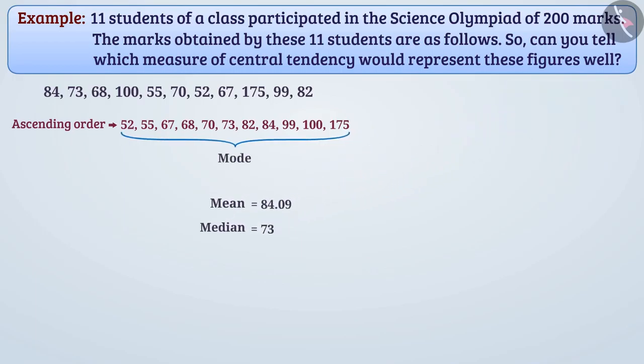Now, if we compare the three measurements, we see that most students have less than 84 marks. Therefore, no approximate estimation of students' marks is obtained from the number 84.09. This is because the numbers 52 and 175 are the extreme values here.